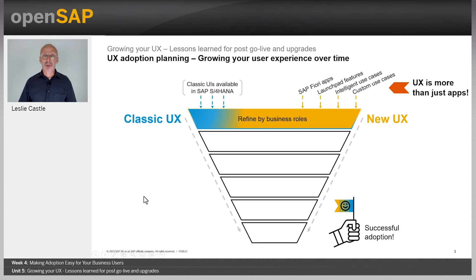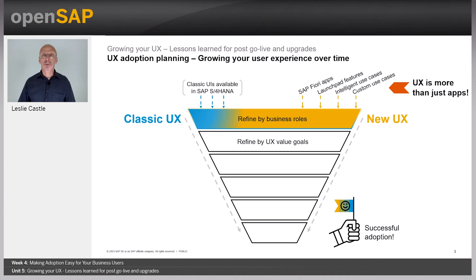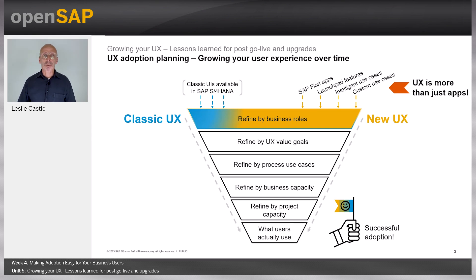Initially, you can refine your app selection by business roles. You can refine your app selection further by UX value goals — if you want to become more mobile or have more insights and use analytics-type apps, for example. You can refine by process use case, by business capacity, by project capacity, and finally by what users actually use. With this methodology, you should come up with a finite set of apps that you can implement and activate, giving you immediate business value.